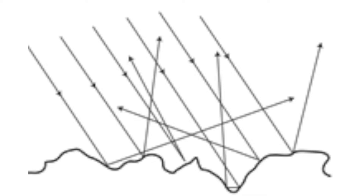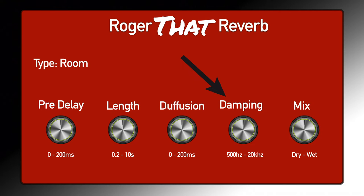Diffusion is how scattered the signal is — low diffusion means the signal bounces back and forth in a defined way; high diffusion means it spreads all around. Damping is like an EQ that lowers the treble over time, so the tail of the reverb gets duller the longer it is. The most important knob is dry/wet: dry is no reverb, wet is full reverb with no original signal. If you use reverb on a send, set the reverb to 100% wet and adjust the amount via the send level.